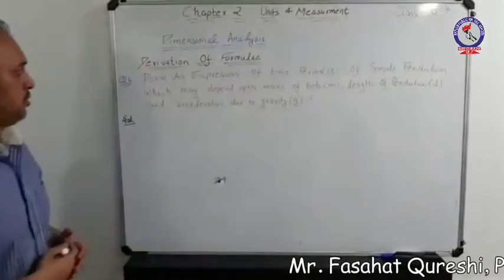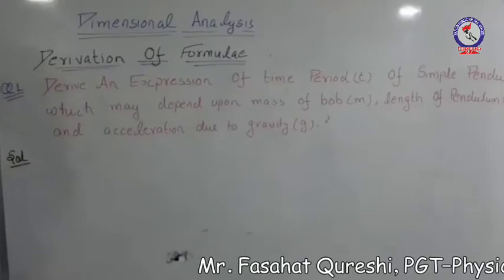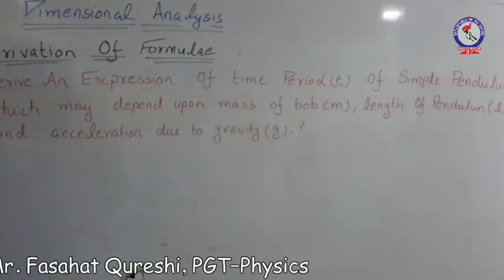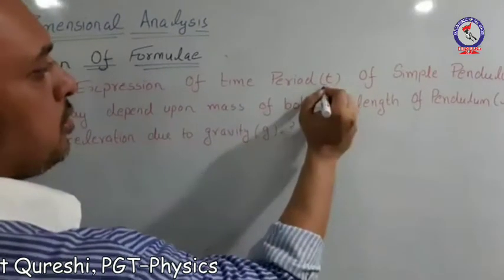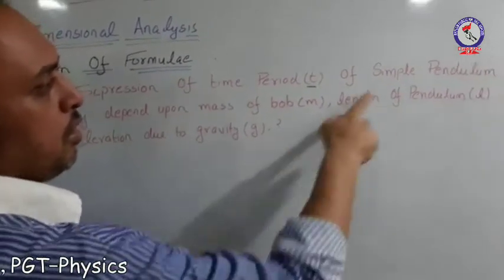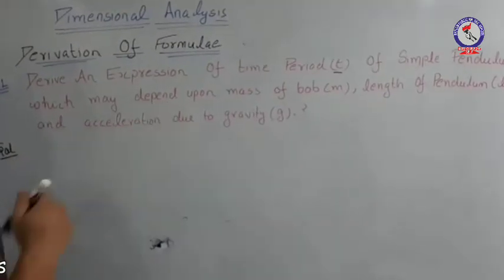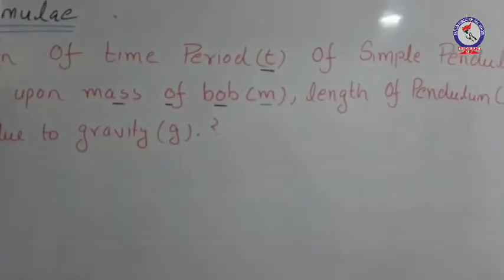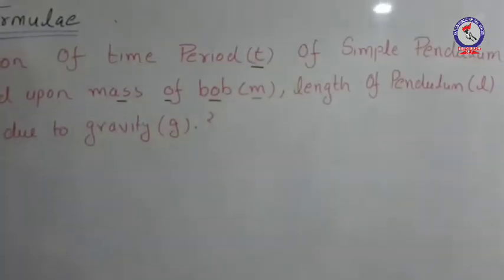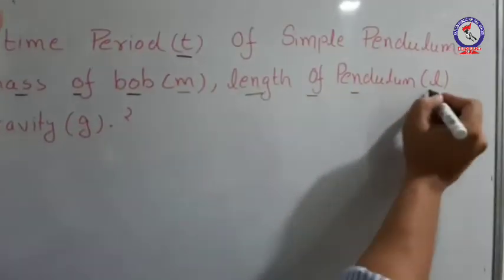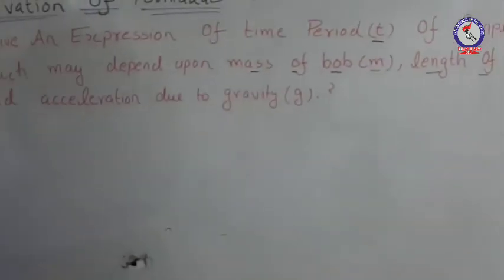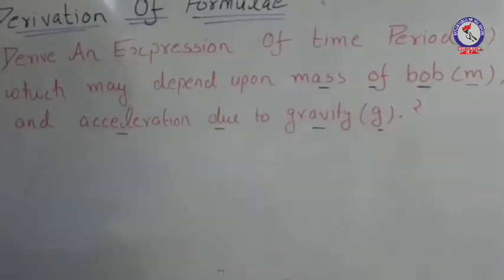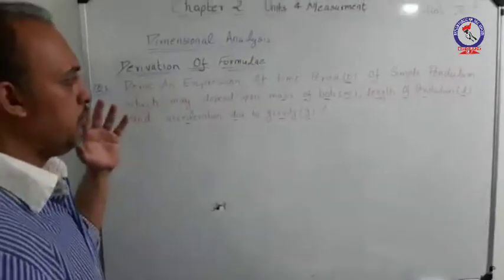Derivation of a formula by the help of dimensional analysis. The question is: derive an expression for the time period of a simple pendulum, which may depend upon the mass of the bob (represented by small m), the length of the pendulum (represented by L), and the acceleration due to gravity (G).